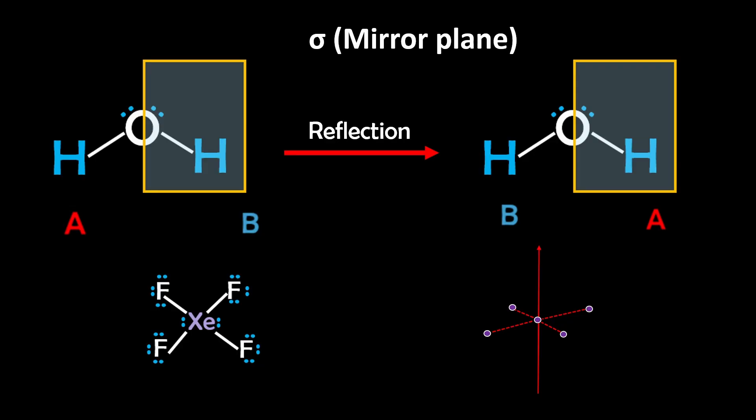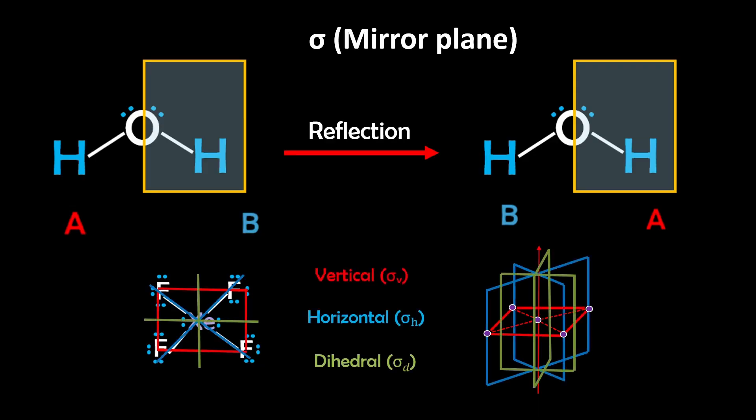Molecules can have multiple mirror planes, vertical, horizontal, or dihedral, depending on how they align with the molecule's principal axis.